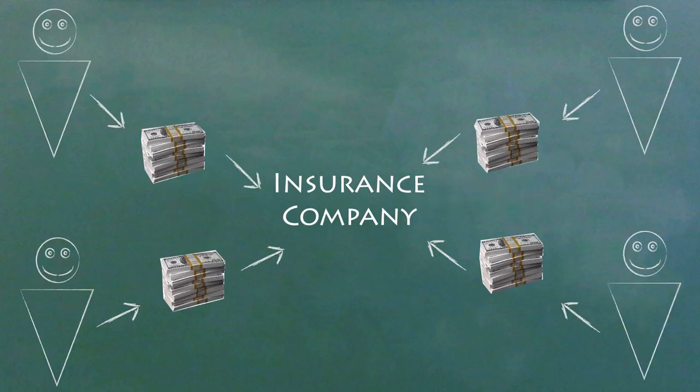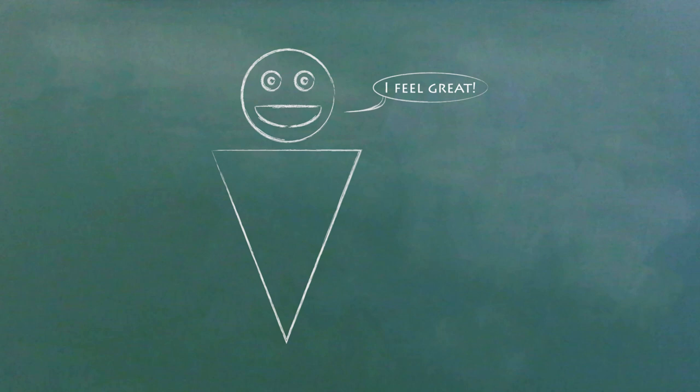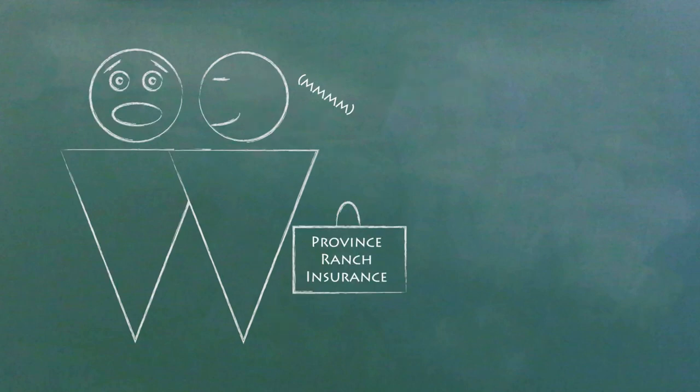Insurance works by getting a group of people together and taking the money all of them pay in small amounts every month to cover their overall medical expenses. This only works if they're not all sick at the same time because then the payments in would be too little to cover the payments out. The best customers for an insurance company to have are people who never get sick because it means getting money in without giving money out. This is why insurance companies sometimes try to kick sick people off, because too many sick people means you start losing money.